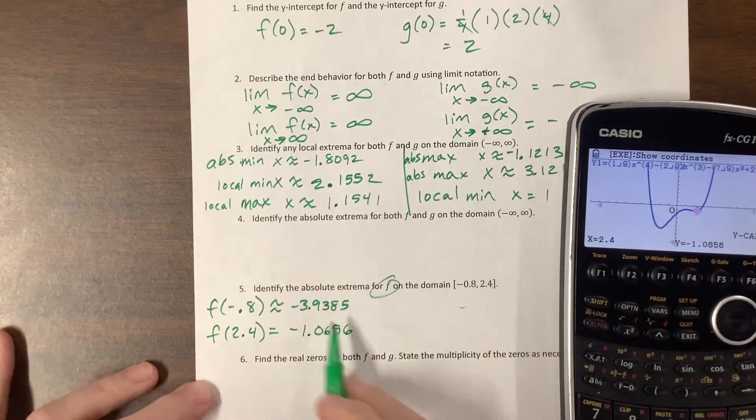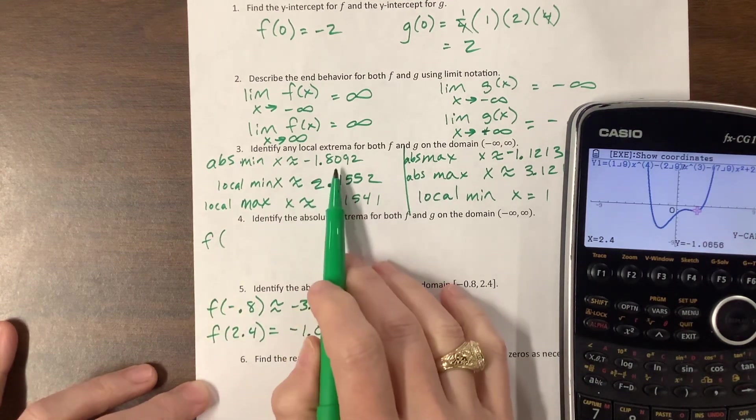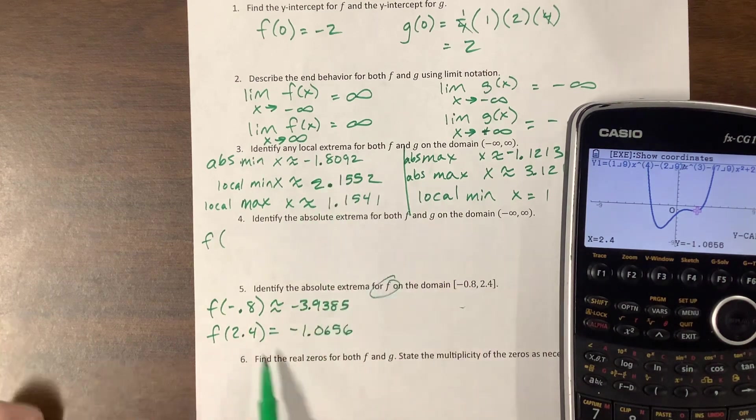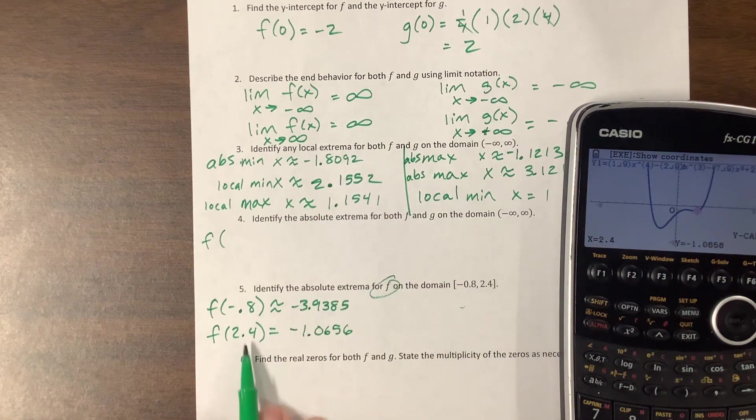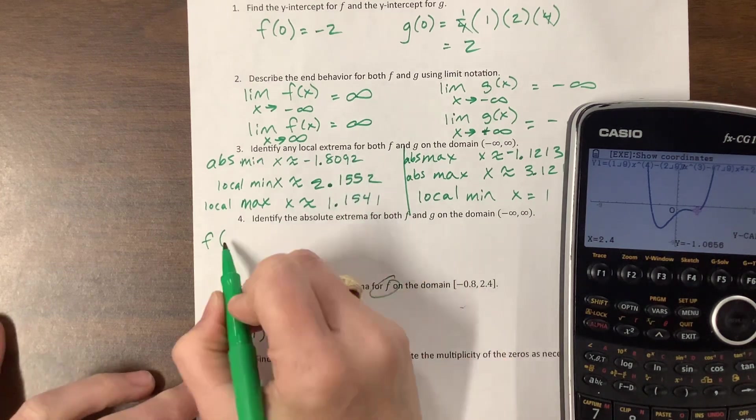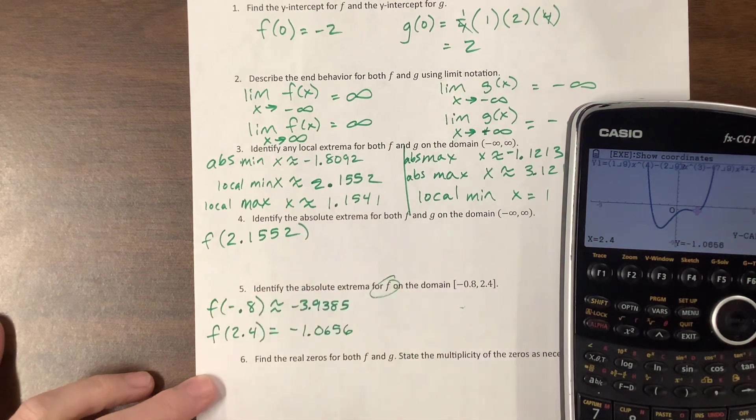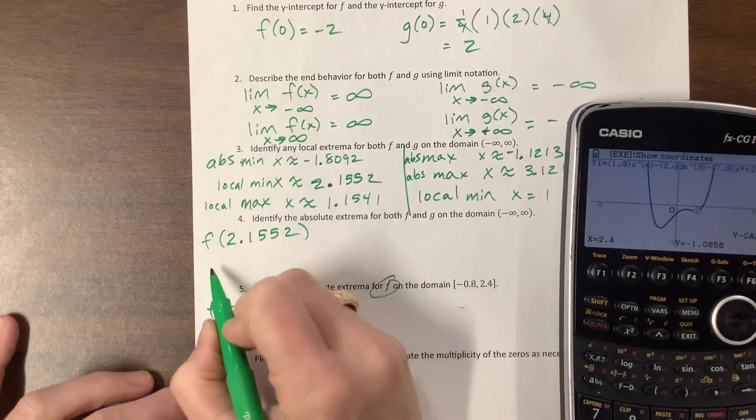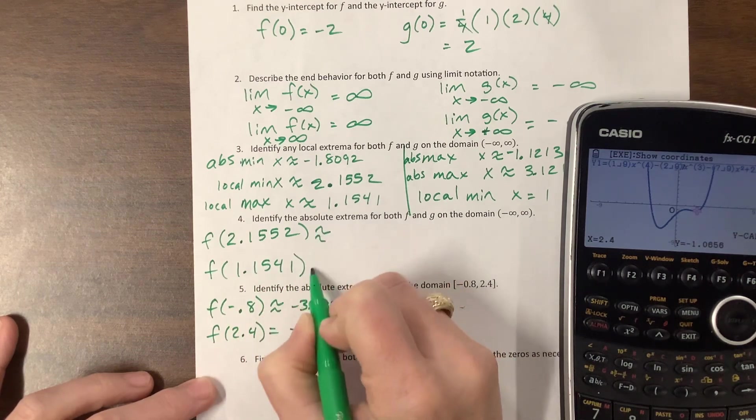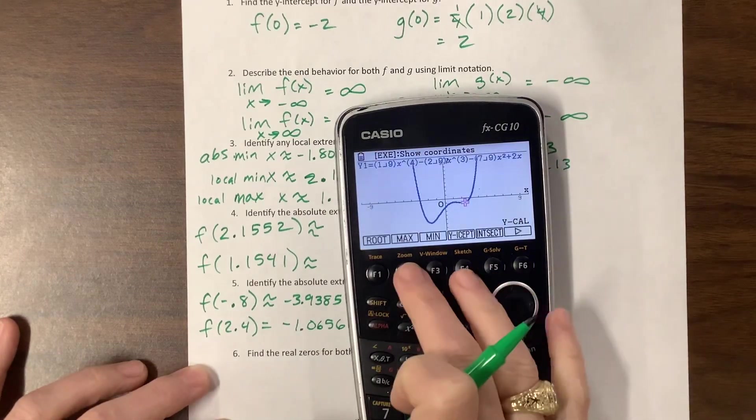And then I can do the same thing. G solve, come over to Y cal. And the other one they wanted was 2.4. And so at f of 2.4, it seems to be equal to negative 1.0656. You know what I should have done? I should have written down these other values. I'm going to write these down. This is all f on this side. I want f of, this one, is this between these two values? I'm looking inside from negative 0.8 to 2.4. This one's inside that world. This one's inside that world, but that one's not. So I want to know what is f of 2.1552 and f of 1.1541.